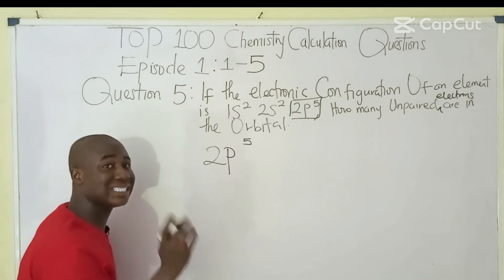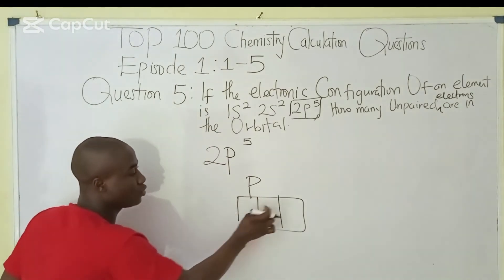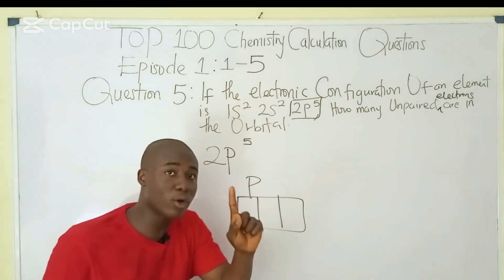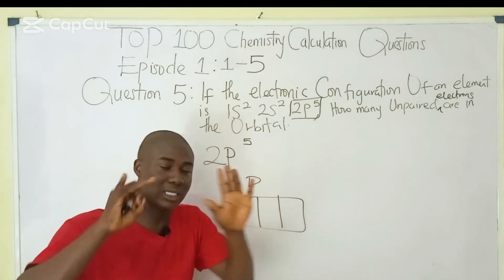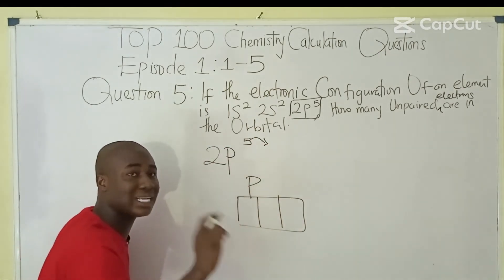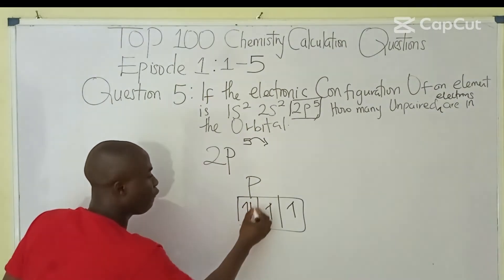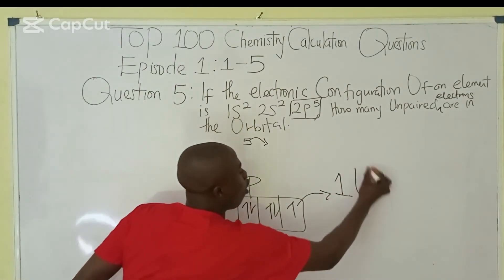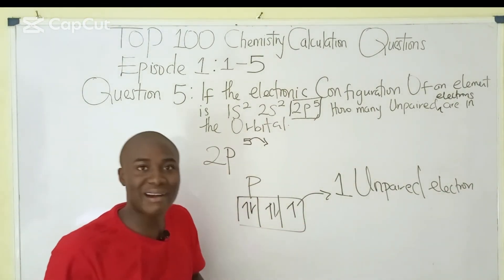For the P orbital, we draw 3 boxes. The 2p⁵ orbital has 5 electrons. According to Hund's rule, we fill singly first: 1, 2, 3 — then pair up the remaining 2, giving positions 4 and 5. So we have: 2 paired and 1 unpaired electron. There is 1 unpaired electron in this atom, which means it is paramagnetic.